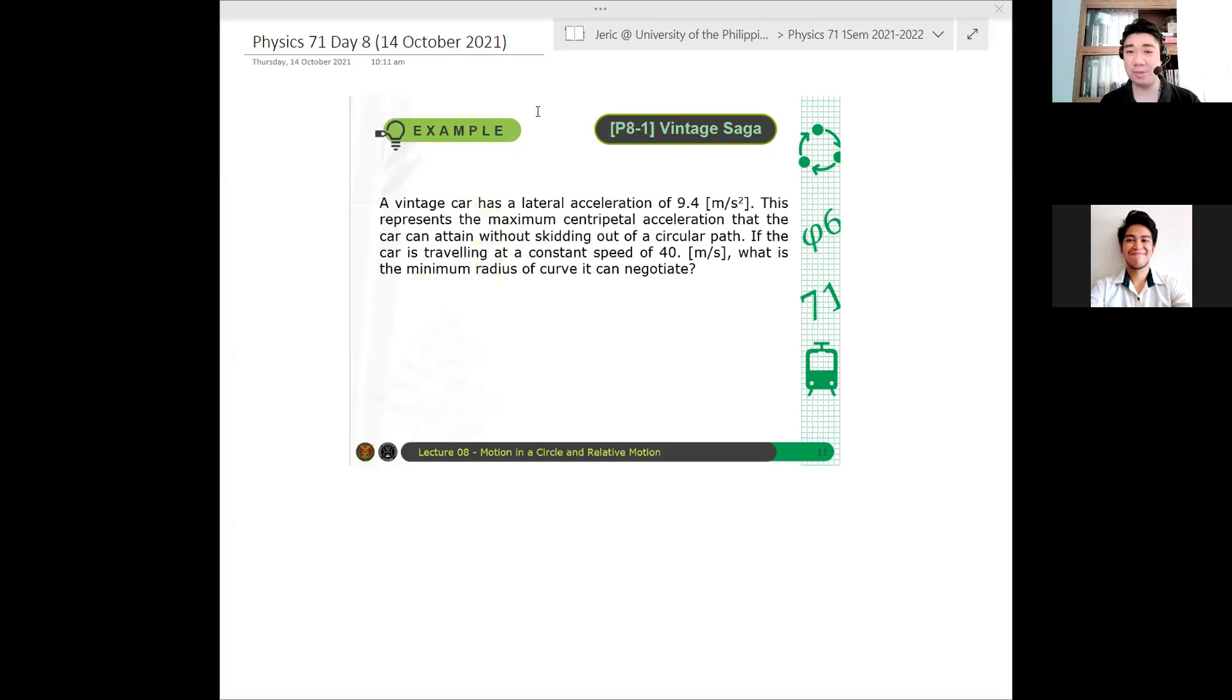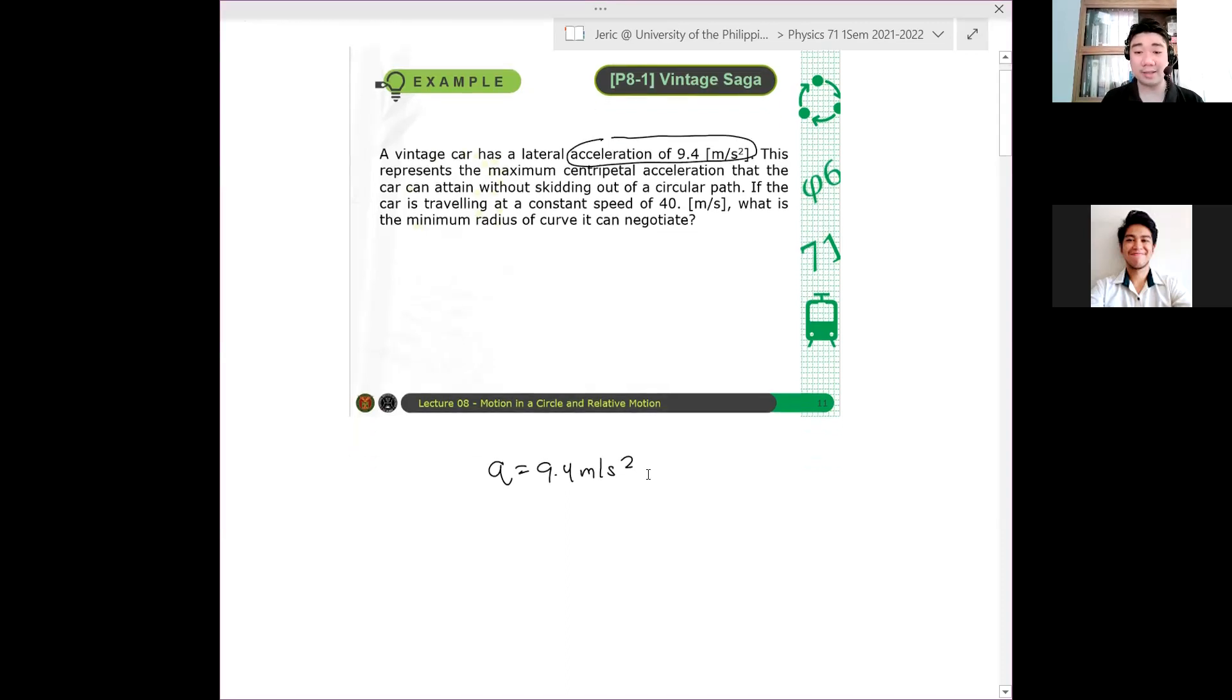Okay, so two minutes have passed. Maybe we can try to solve this problem. This is really easy. So given that the acceleration of the car is 9.4 meters per second squared, so I have an A here is 9.4 meters per second squared. And that represents the maximum centripetal acceleration. So ang tinatanong ngayon is the minimum radius of curve. Given yung speed ng isang car, V equals 40 meters per second.